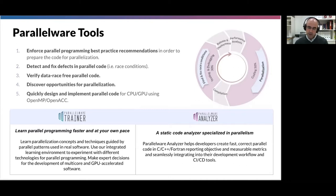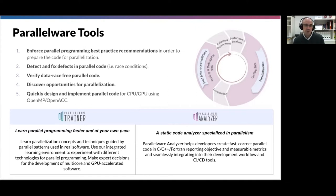When you code a parallel version of the code, it would be great if the first parallel version you write is correct and the fastest one, but this is not the case. You typically need to code different versions, make changes, and go back and forth until you find the final version that runs in parallel correctly and faster. This searching process is extremely time consuming, so coding can take an additional 30 to 50% of time depending on the code and the expertise of the developer.